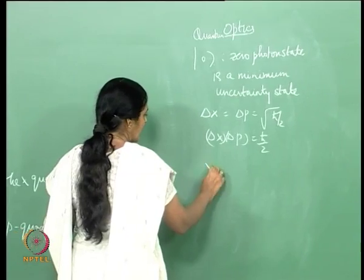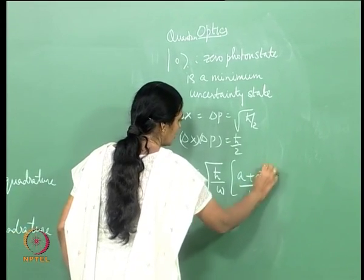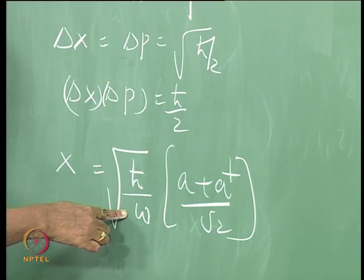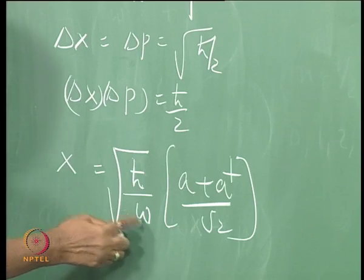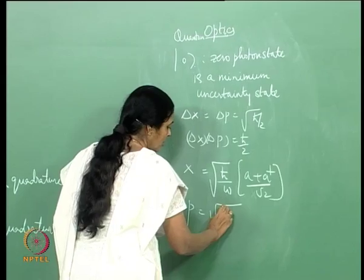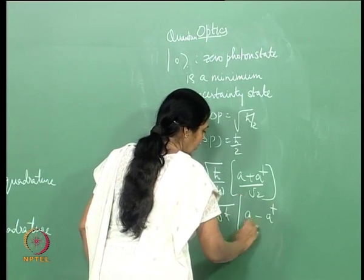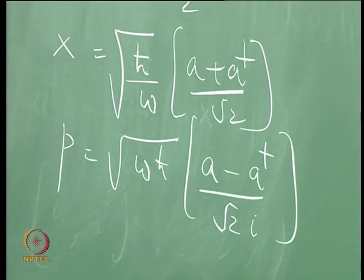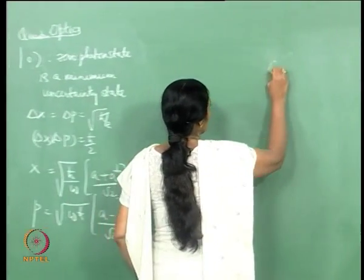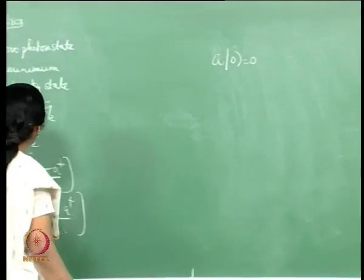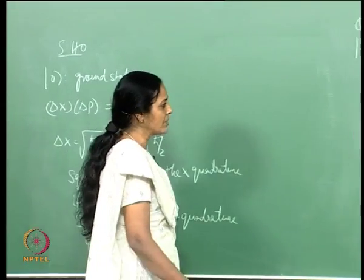You could derive this by writing x in terms of a and a dagger: x equals root of h-cross over omega times (a plus a dagger) over root 2. In the harmonic oscillator there was also a mass, and root of h-cross over m omega has dimensions of length. Here there is no m, but root of h-cross over omega gives x, and P equals root of omega h-cross times (a minus a dagger) over root 2 times i. Given this, one can find delta x and delta p in the 0-photon state, knowing that a on ket 0 equals 0.